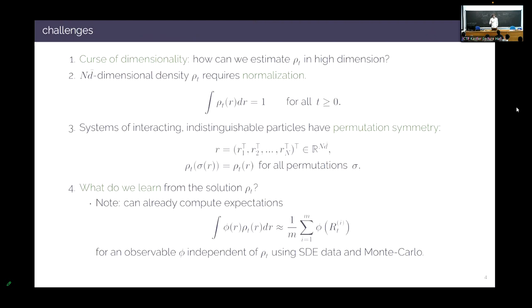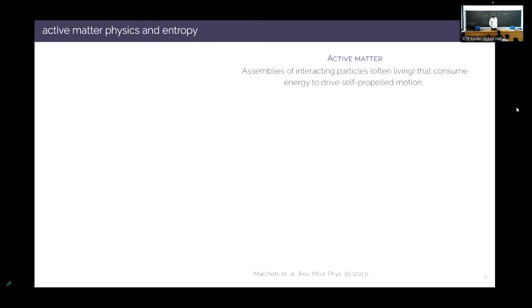Fourth — a philosophical question — if an oracle gave me the solution, what do I actually do with it? I can't visualize it or plot it. This is compounded by the fact that I already have the SDE, so I can generate samples from rho_t and compute expectation values. Whatever I get from solving this equation, I need some low-dimensional interpretable output — some physical quantity we really care about. One answer comes from active matter physics.